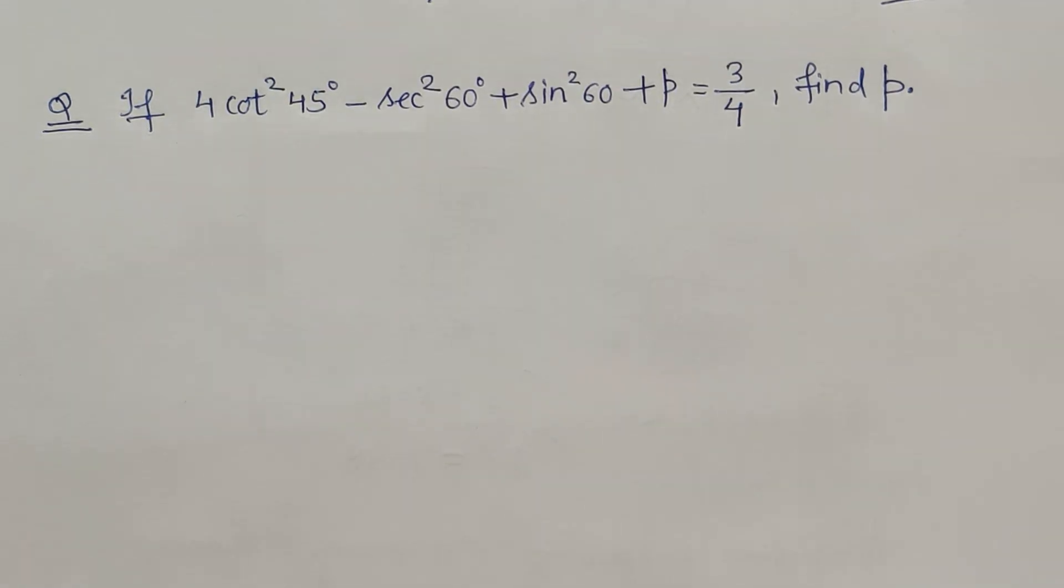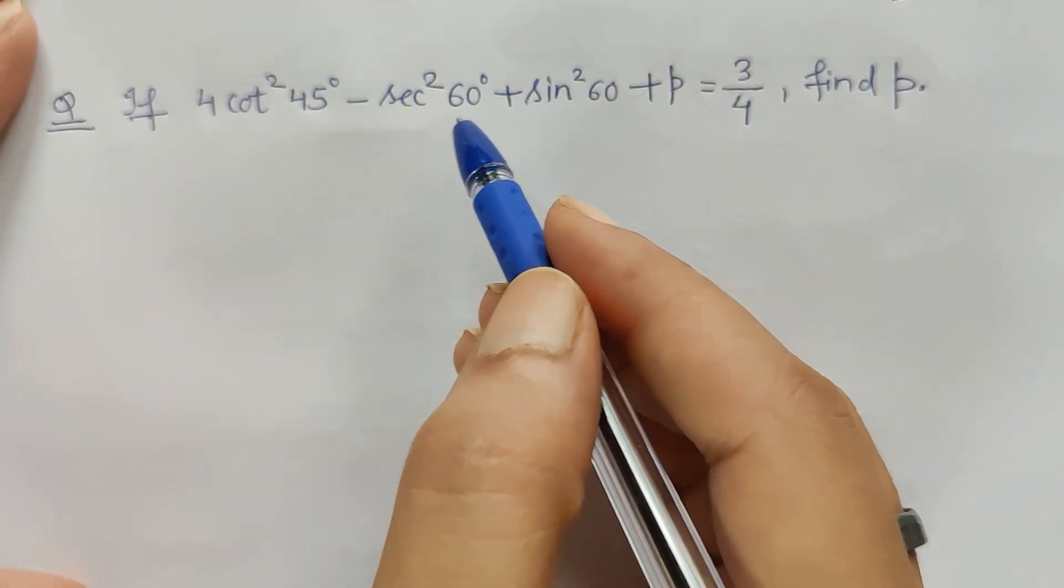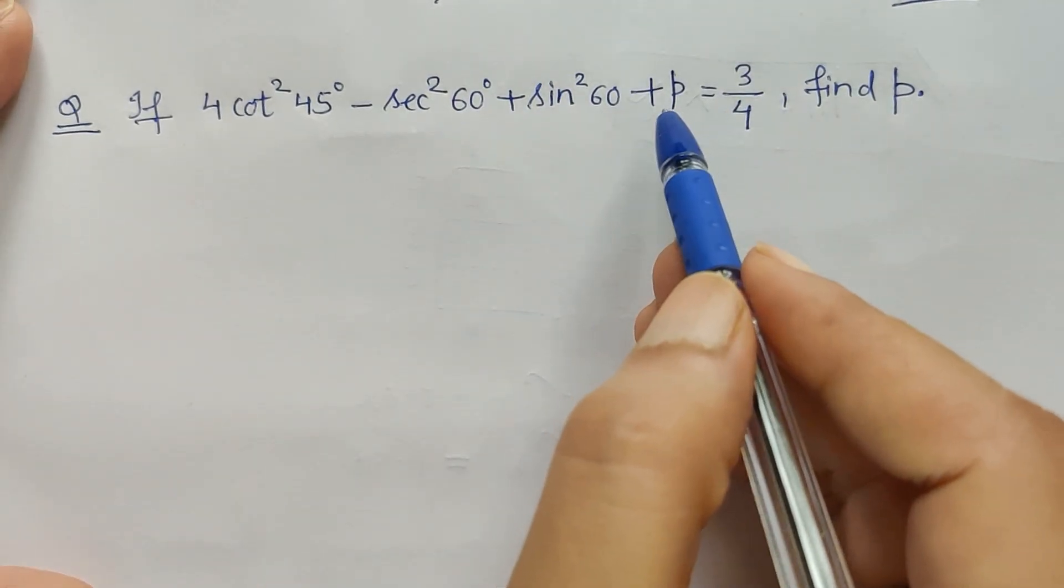Hello friends, now just look at this expression: 4 cot²45° - sec²60° + sin²60° + p = 3/4, and here we have to find the value of p. Now how can it be done?